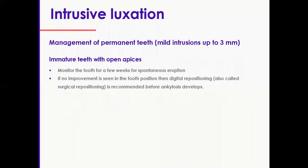In permanent teeth, it depends whether it's mild or severe or whether you've got an immature tooth or a mature tooth with closed apex. In an immature tooth with a mild intrusion, which is roughly up to three millimeters — and by immature we mean with an open apex — just monitor the tooth for a few weeks to see if it decides to erupt back. However, if after a good few weeks there's absolutely no sign of eruption, try some digital repositioning.